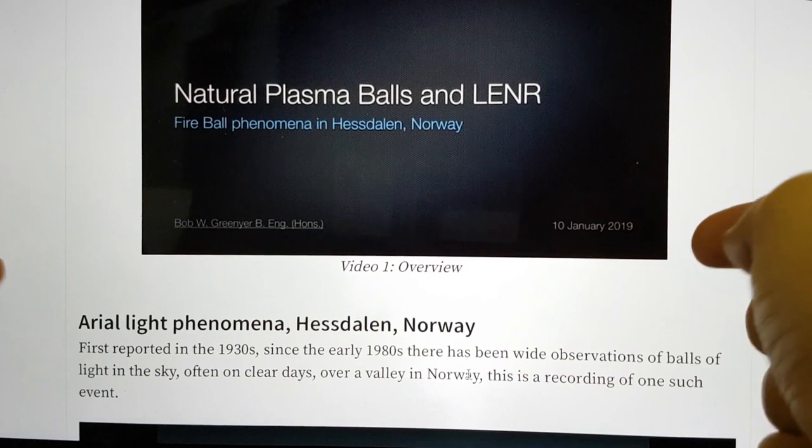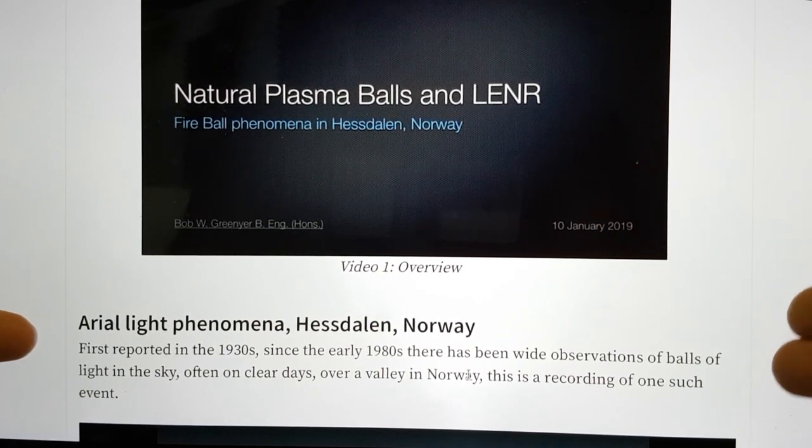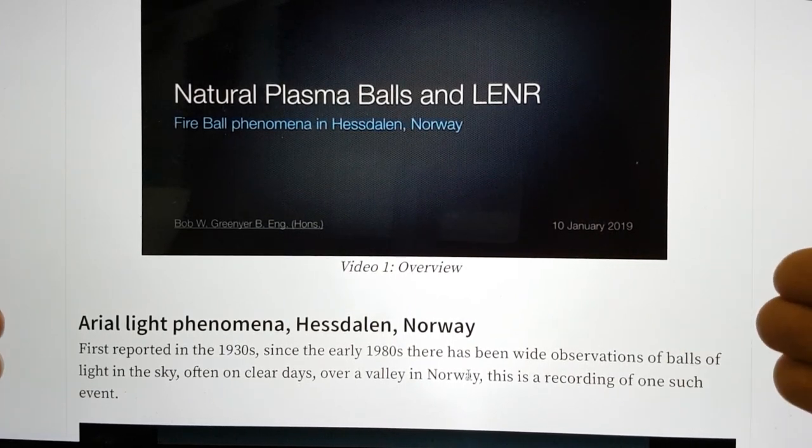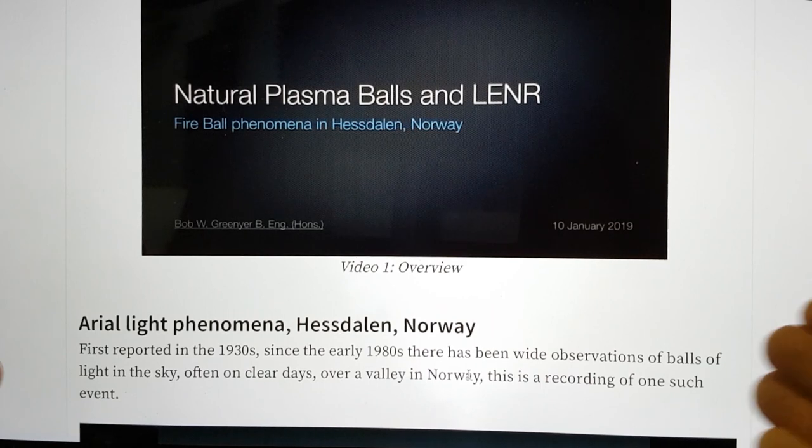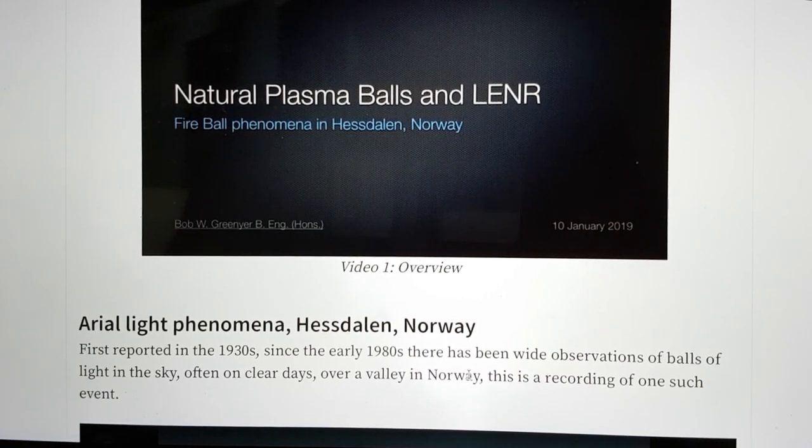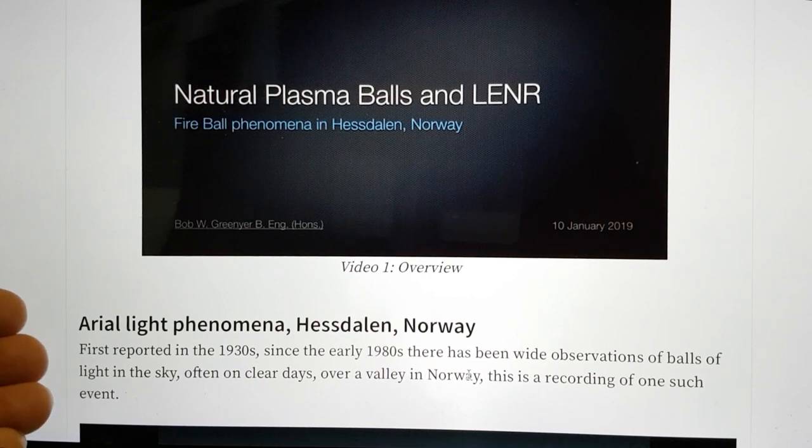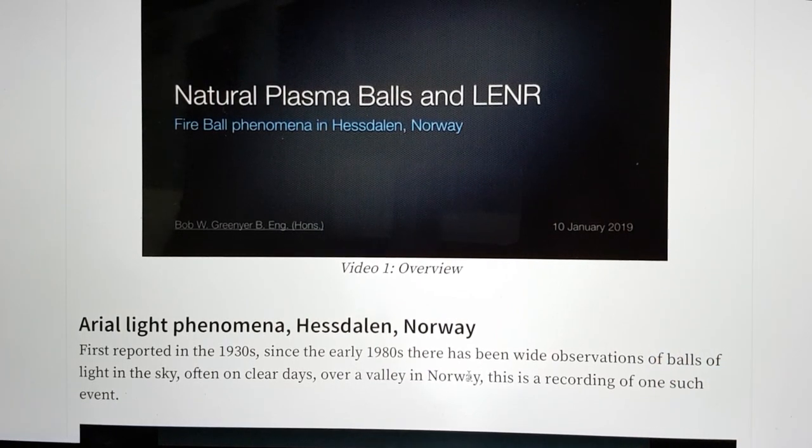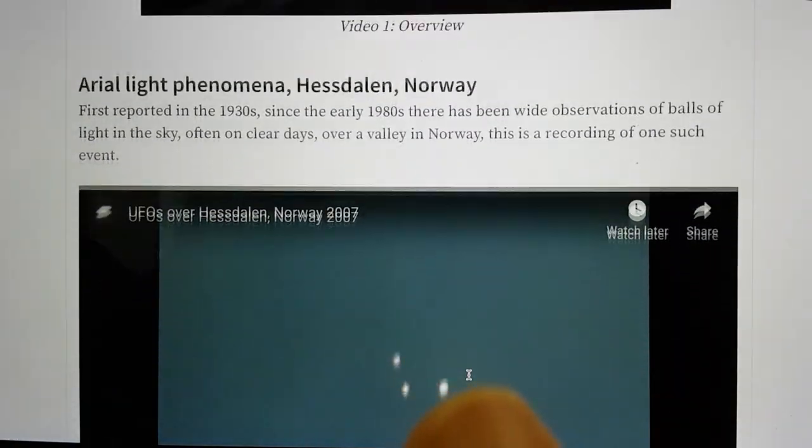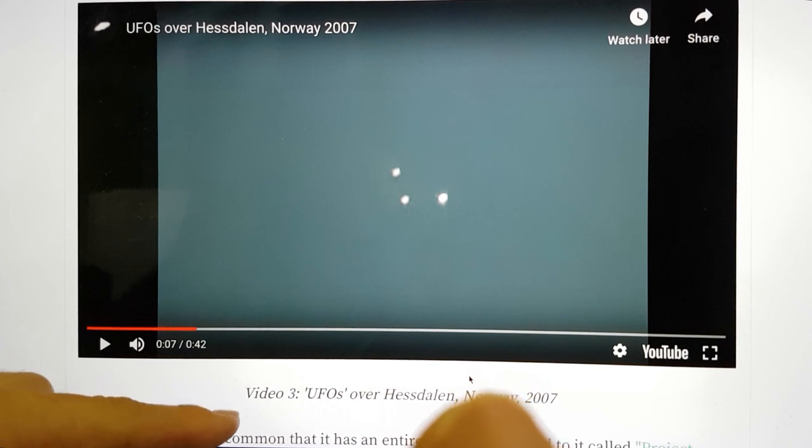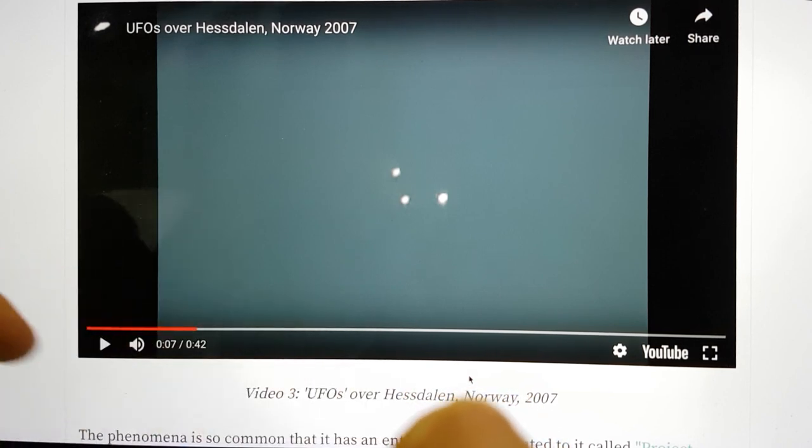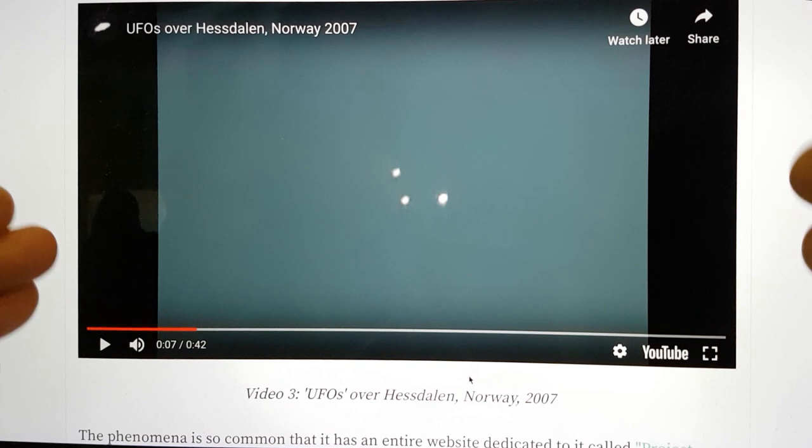First up, I want to talk about the fact that this aerial light phenomena occurring in this valley called Hessdalen in Norway was first reported in the 1930s. But since the 1980s, there's been wide observation of balls of light in the sky, even on clear days, and actually often on clear days. Below here, I have a video that's available on YouTube, cunningly called UFOs over Hessdalen, Norway, 2007. I can't play it because it's someone else's work, but you can play it through the blog post.